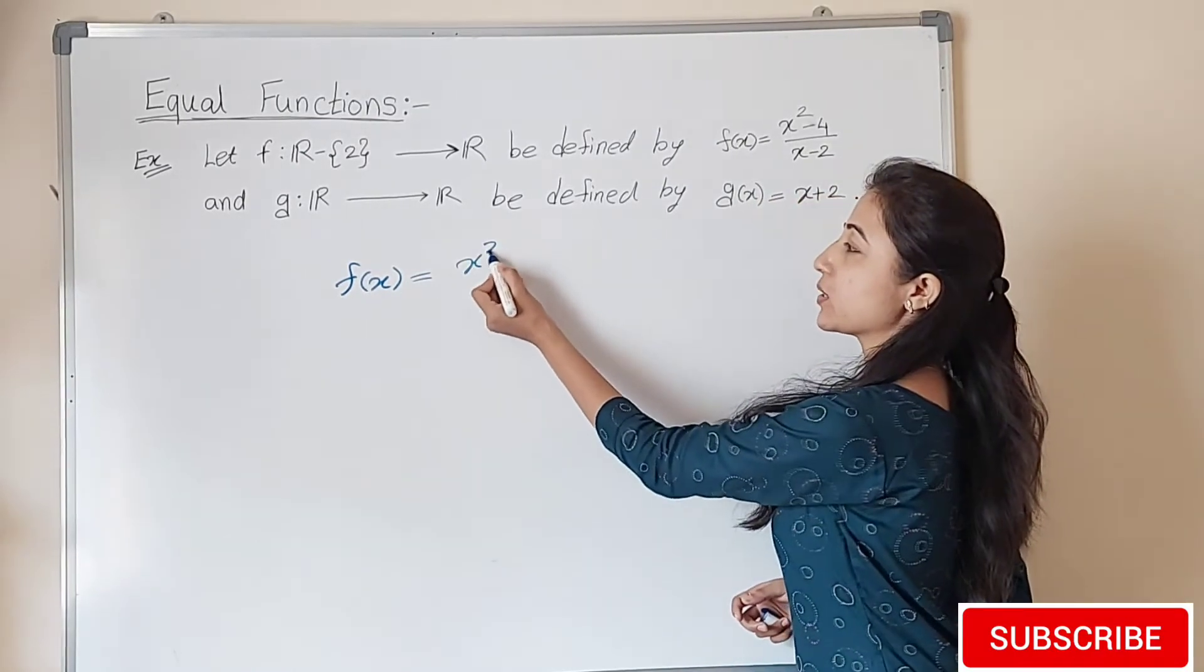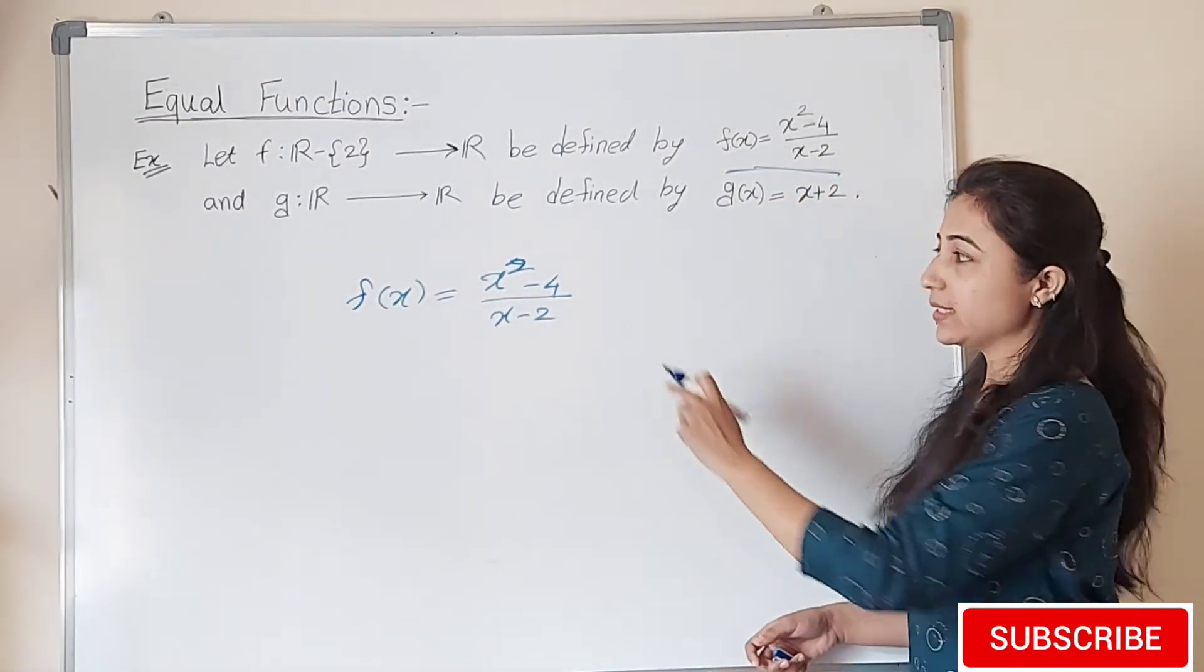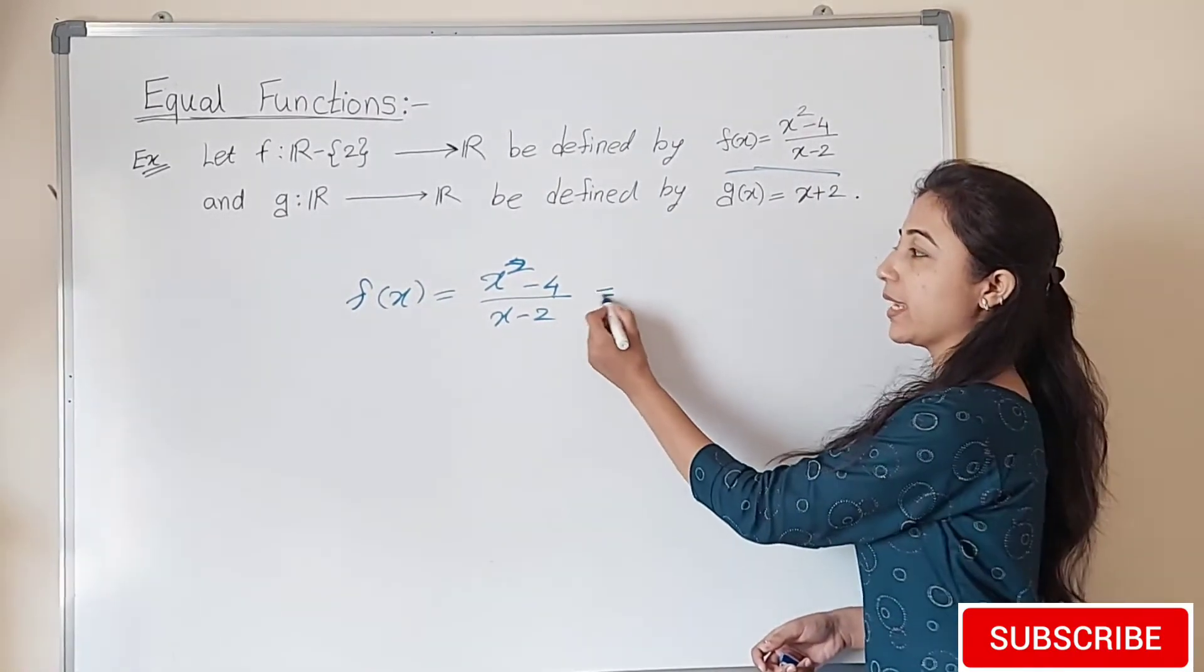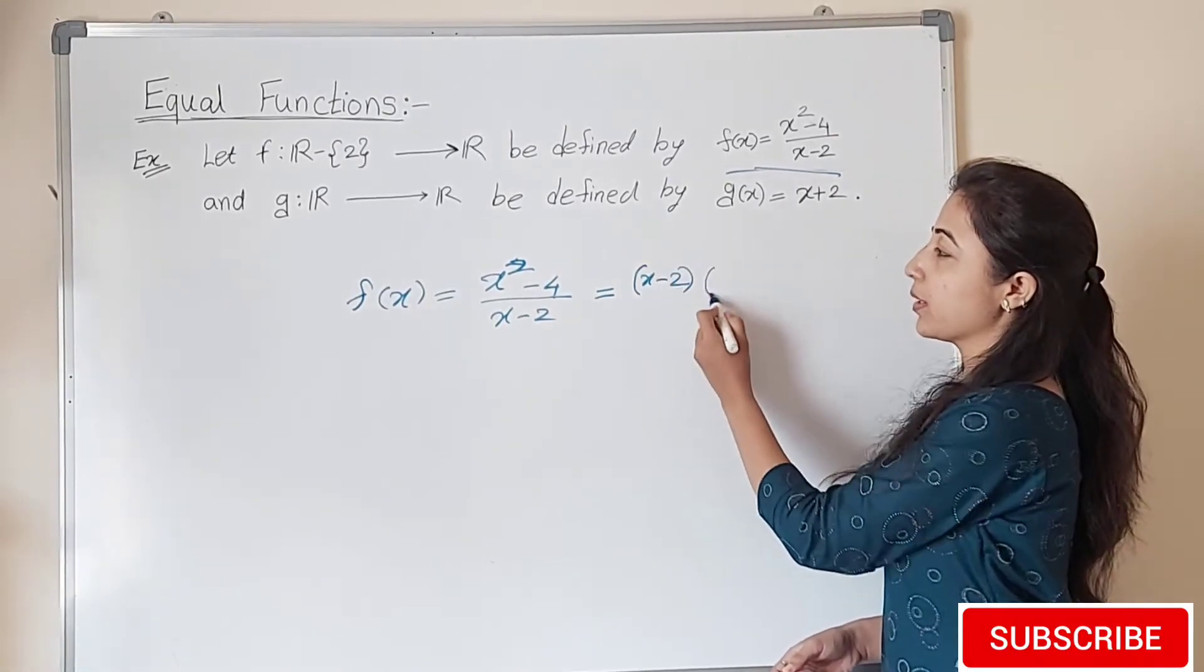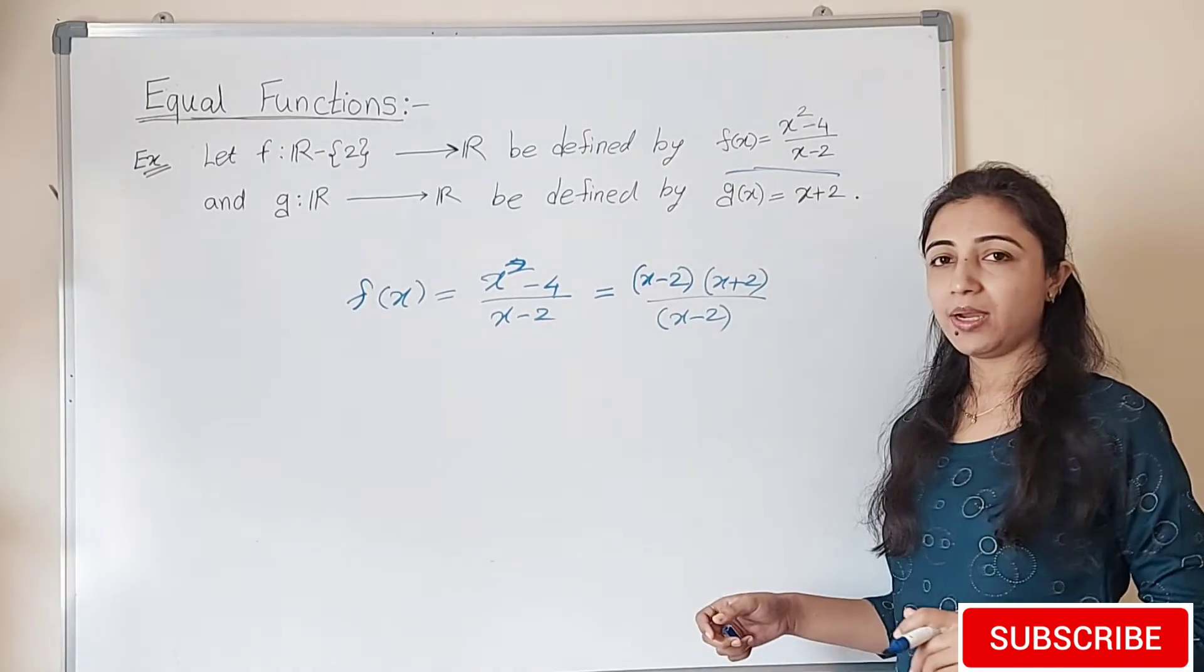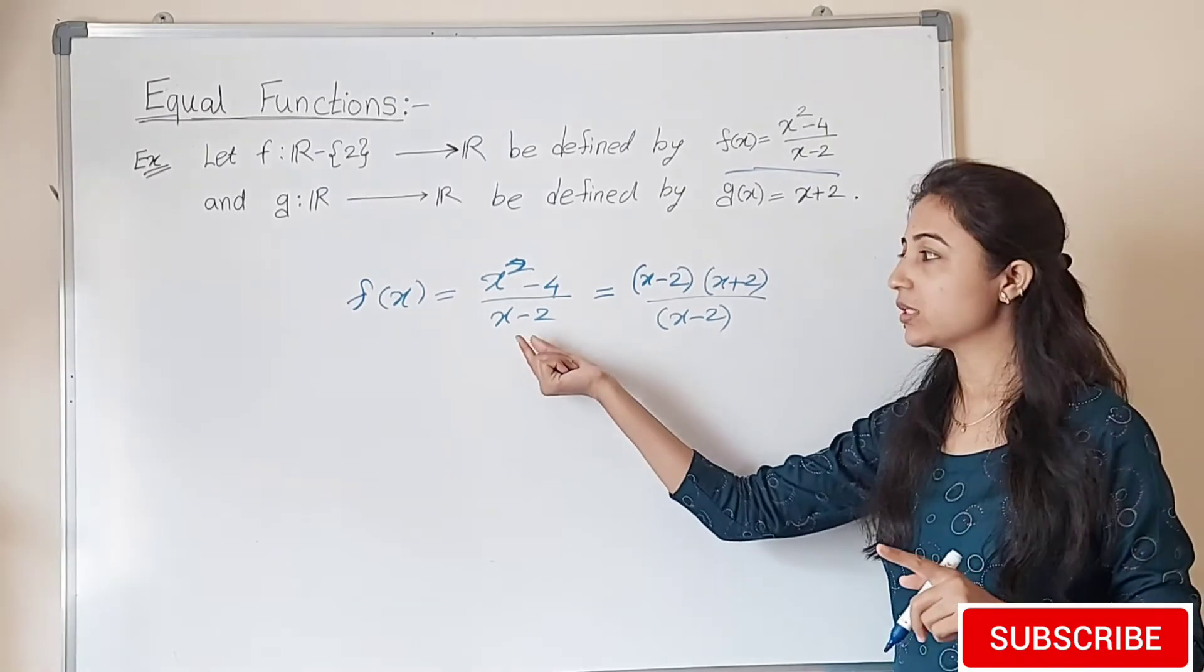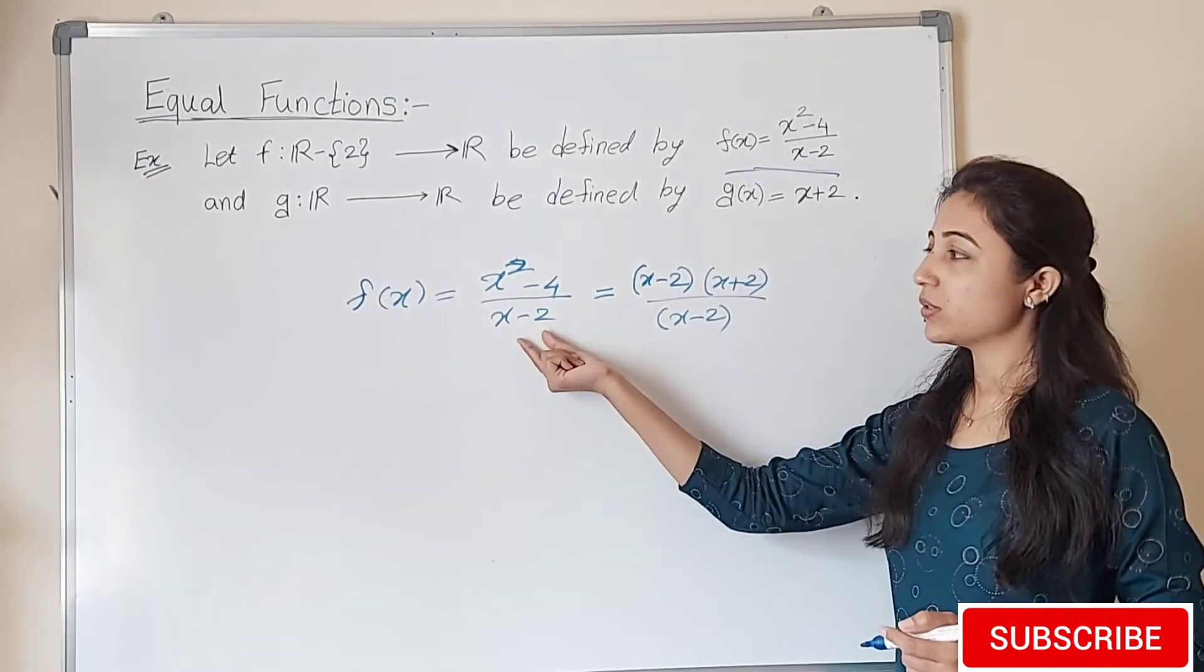And now see here f(x). f(x) is defined as x squared minus 4 divided by x minus 2. If we use the formula a squared minus b squared equals (a minus b)(a plus b), this becomes (x minus 2)(x plus 2) divided by (x minus 2). Actually, this function has a problem at x equals 2, and the function does not exist there.